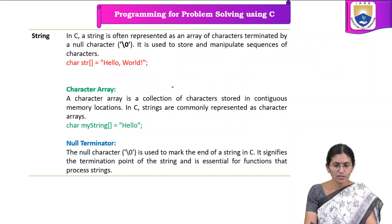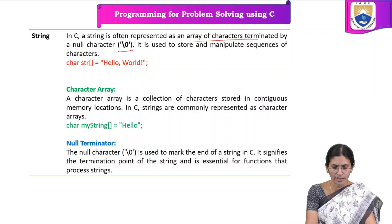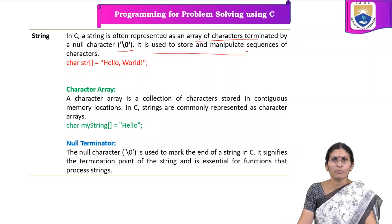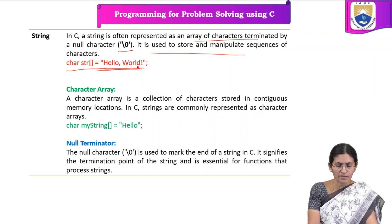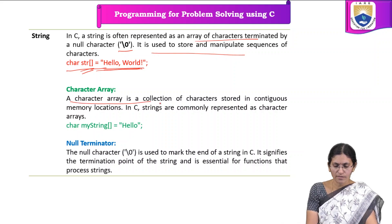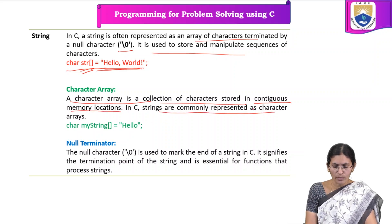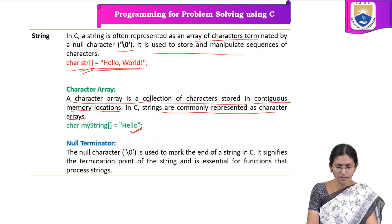Next is string — a string is represented as an array of characters which is terminated by a null character. It is used to store and manipulate sequences of characters. Anything enclosed in double quotes is treated as a string and stored in the form of an array of characters. A character array is a collection of characters stored in contiguous memory locations. In C, strings are commonly represented as character arrays, and we can declare and initialize a character array in the same line.